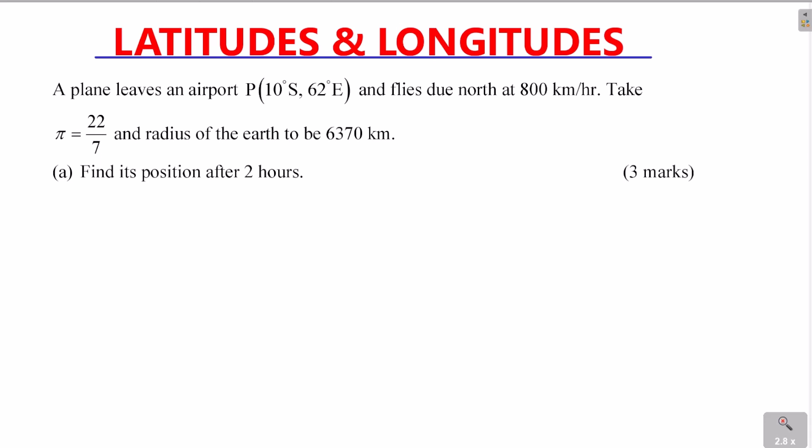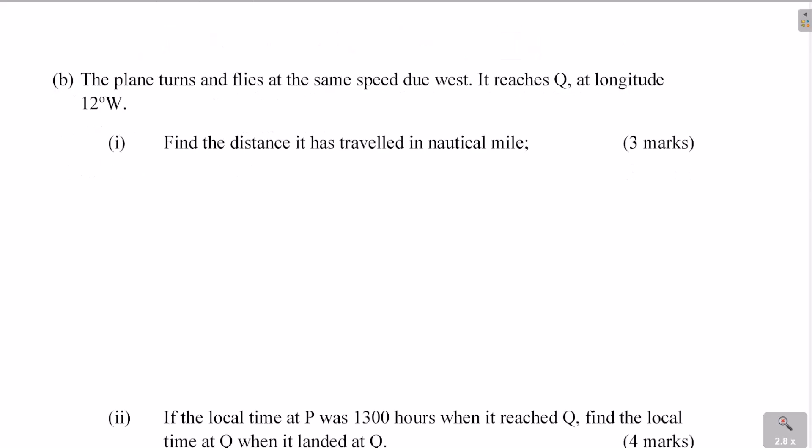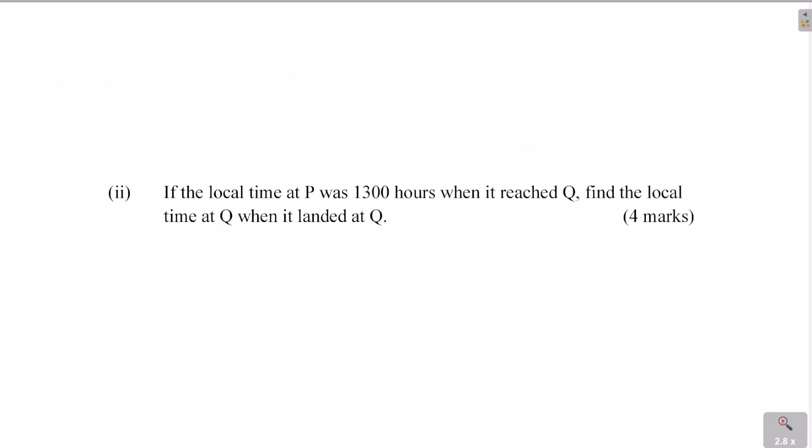Part A: Find its position after 2 hours. Part B: The plane turns and flies at the same speed due west. It reaches Q at longitude 12 degrees west. Part B1: Find the distance it has traveled in nautical miles. Part B2: If the local time at P was 1300 hours when it reached Q, find the local time at Q when it landed.